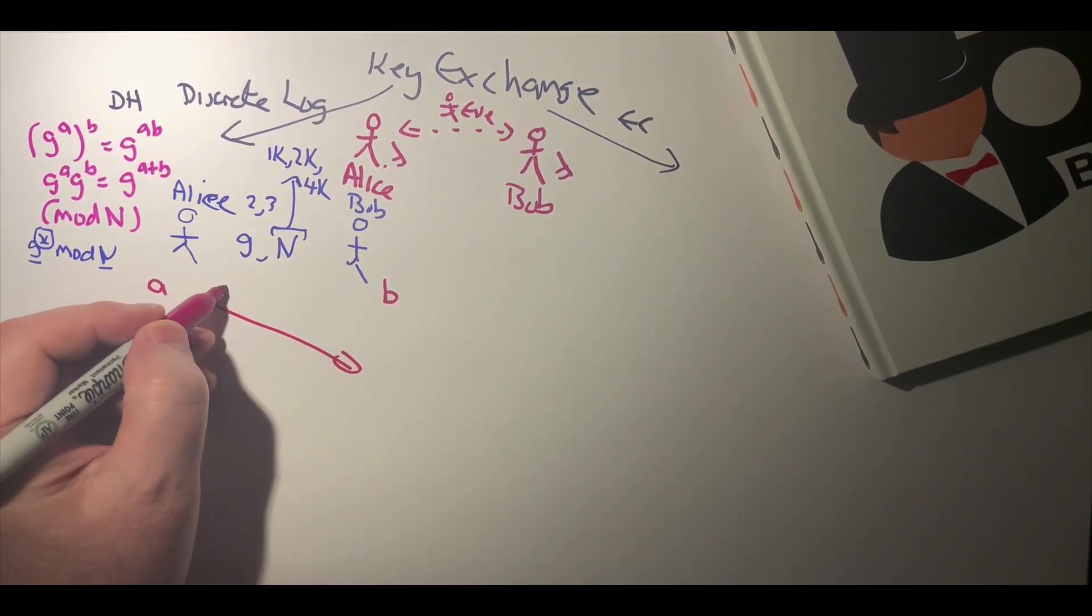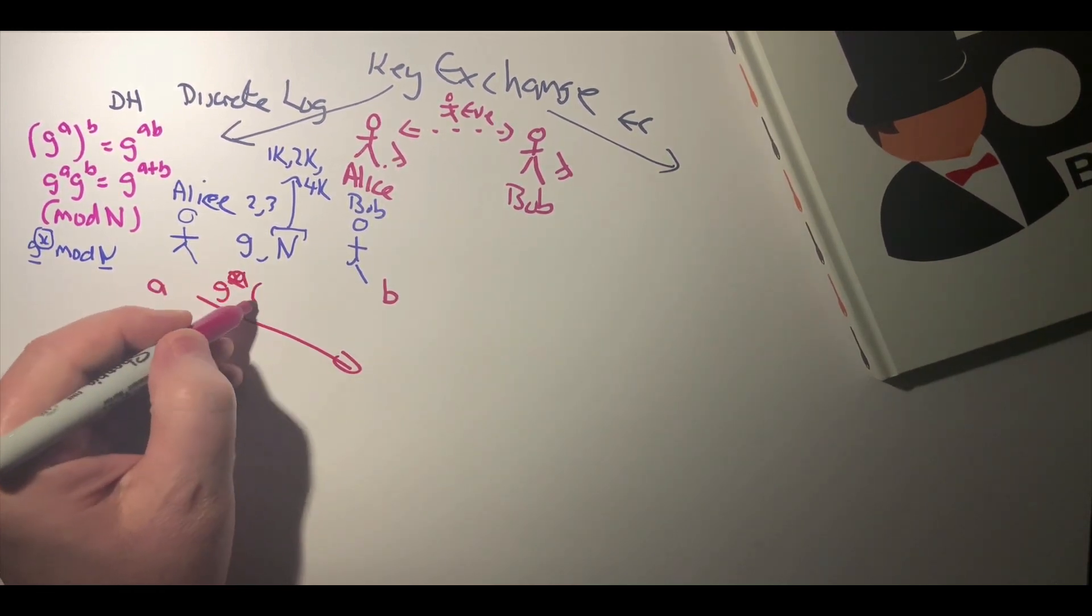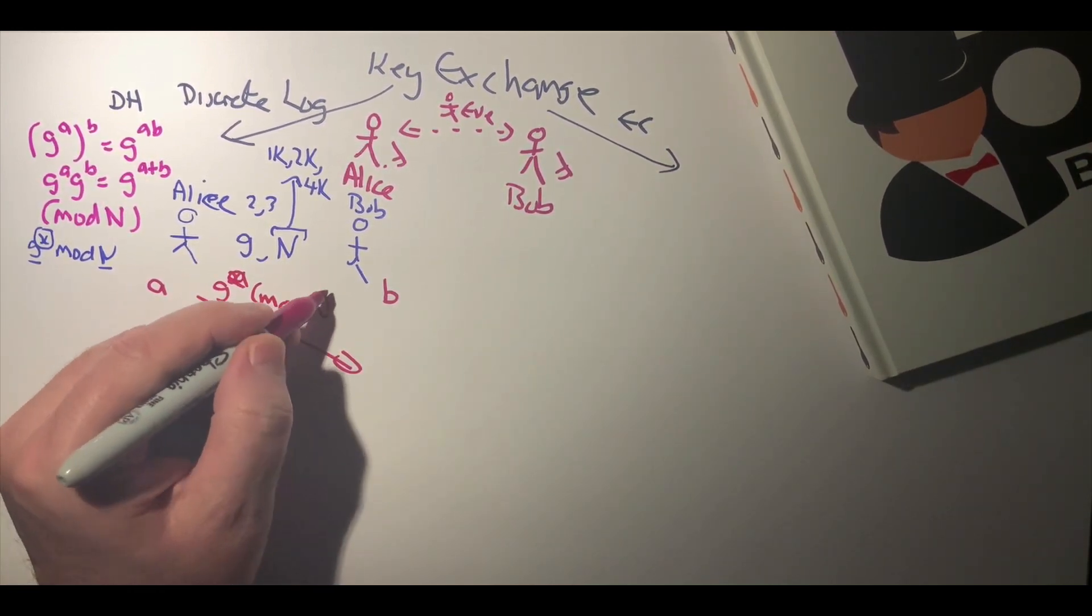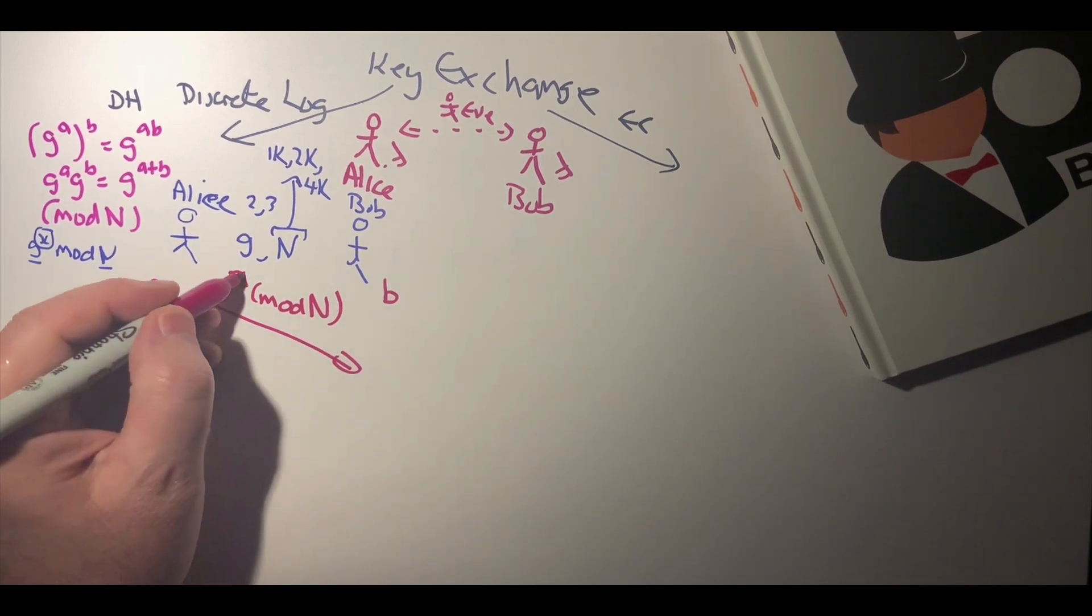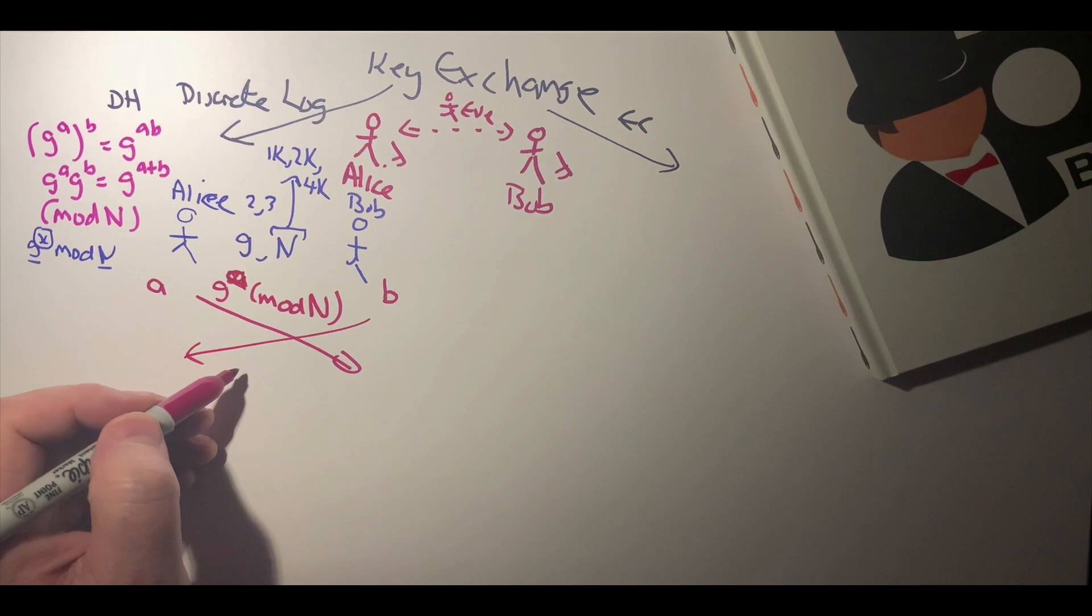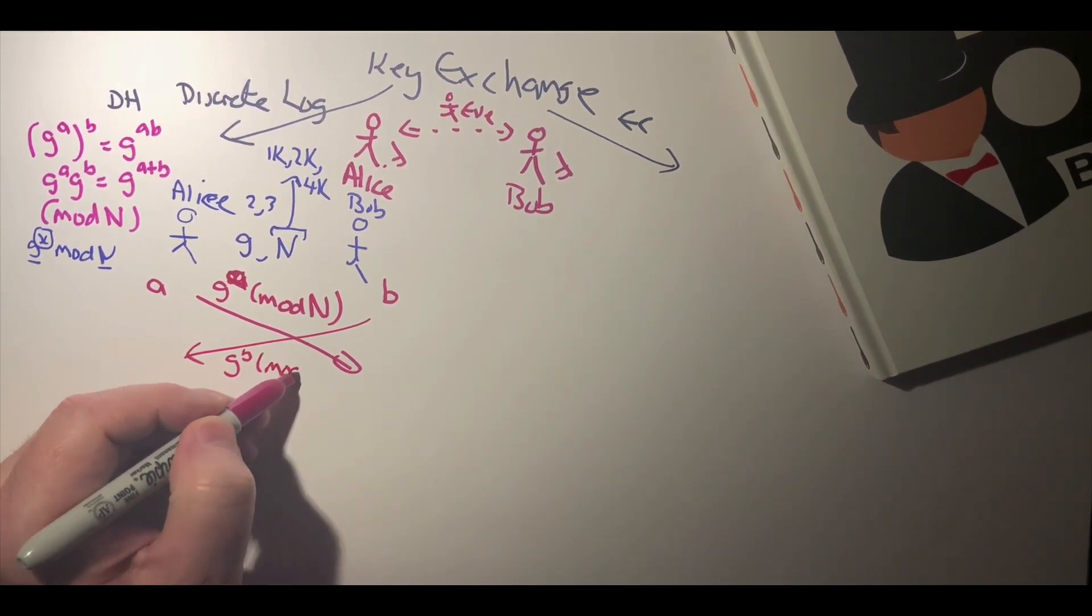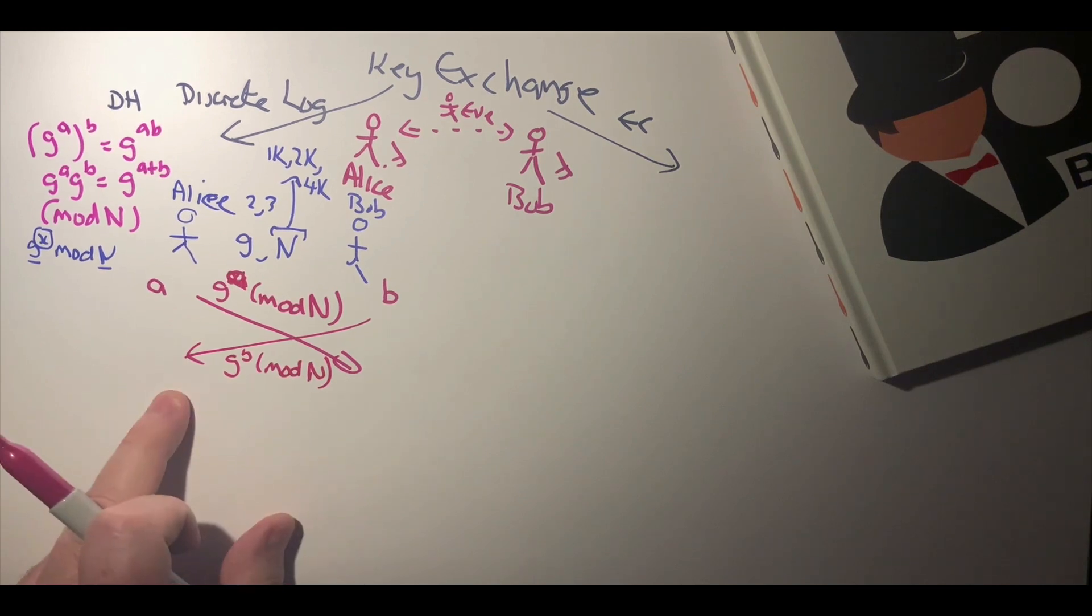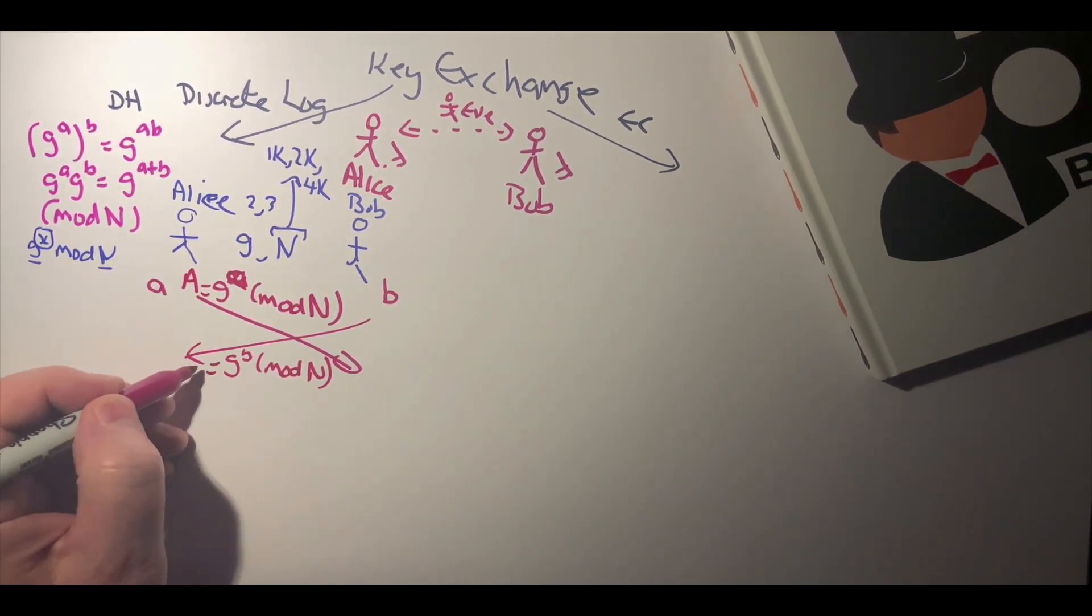Then Alice generates g to the power of a mod n, where n is the remainder of a division with n. That's g to the power of a mod n. Bob generates g to the power of b mod n, and we'll call that a and we'll call that b.